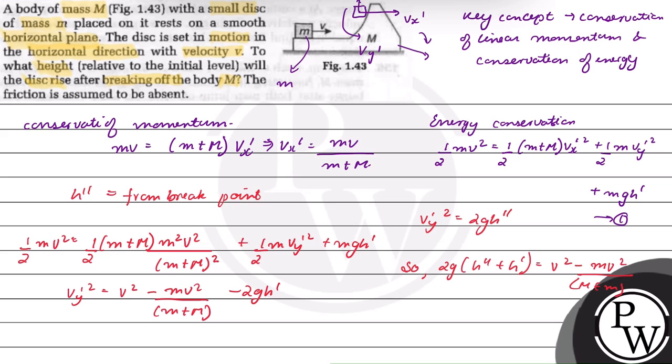The total height raised from the initial level, capital H, will be equal to h single dash plus h double dash, and this will be equal to Mv² divided by 2g(M+m).